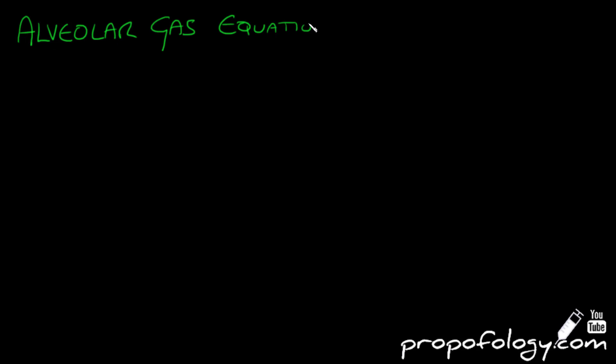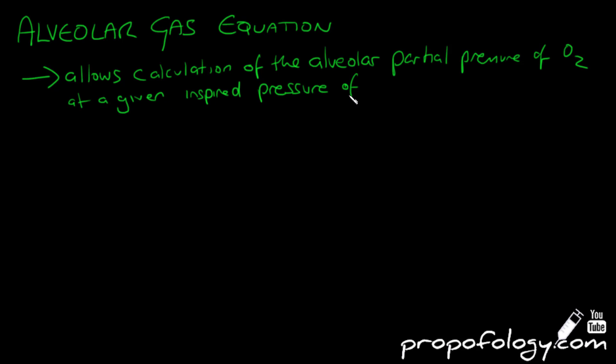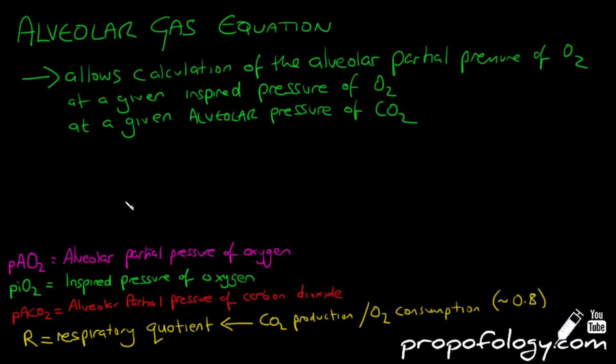The alveolar gas equation allows you to calculate the alveolar partial pressure of oxygen for a given inspired pressure of oxygen and a given alveolar pressure of carbon dioxide. Providing you know these variables, you can calculate the alveolar partial pressure of oxygen, or how much oxygen is in your alveolus. So let's look at the equation. We have PAO2...